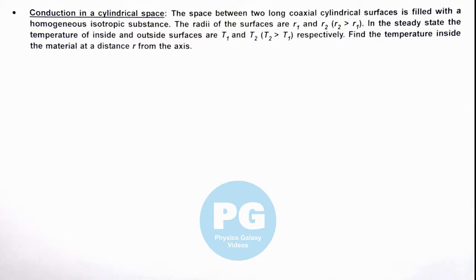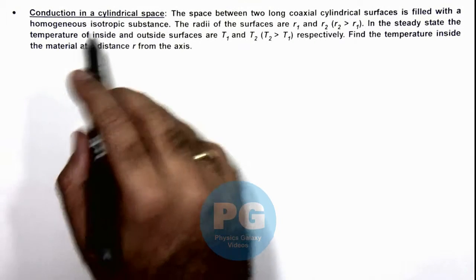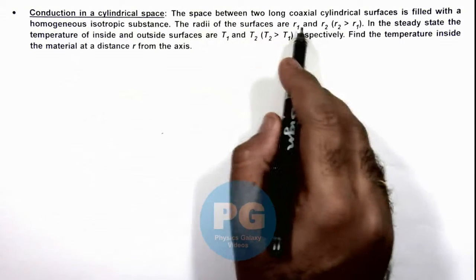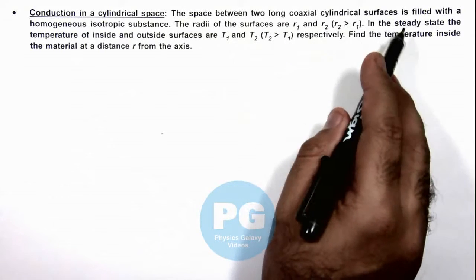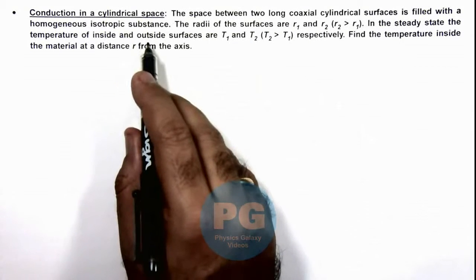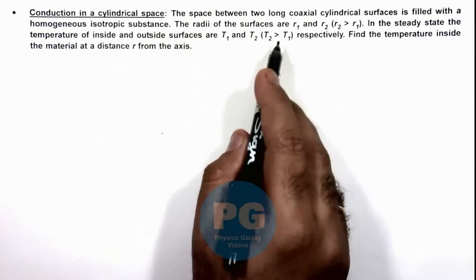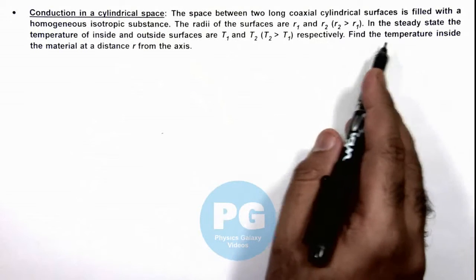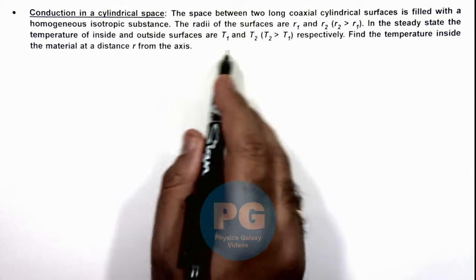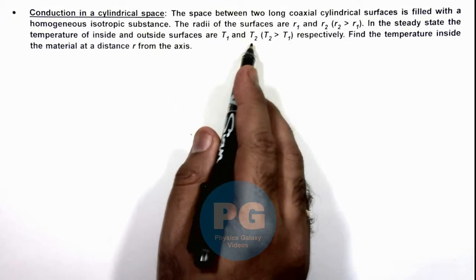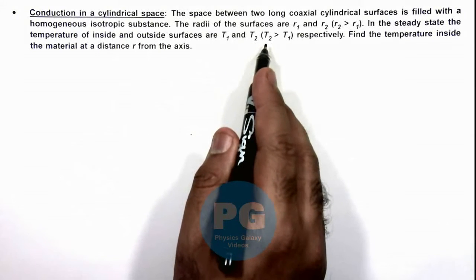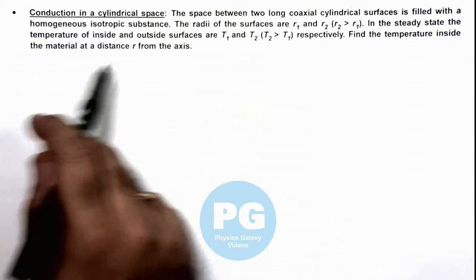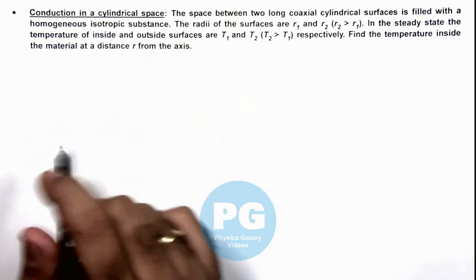In this illustration we'll study about the conduction in a cylindrical space. We are given that the space between two long coaxial cylindrical surfaces is filled with a homogeneous isotropic substance. The radii of the surfaces are r1 and r2. In steady state, the temperature of inside and outside surfaces are t1 and t2, with the outside surface at higher temperature. We are required to find the temperature inside the material at a distance r from the axis.